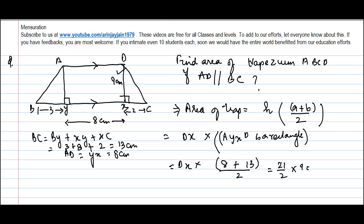So if you do this, you get 10.5 into 9 equals 94.5 cm². So this is the area of the trapezium.